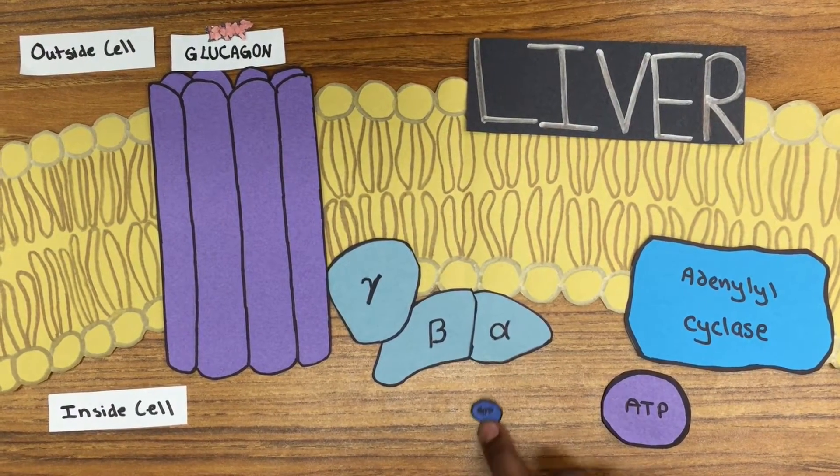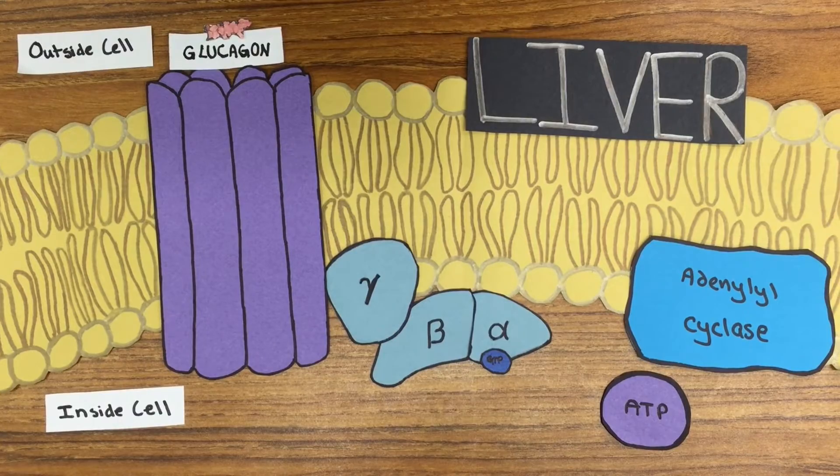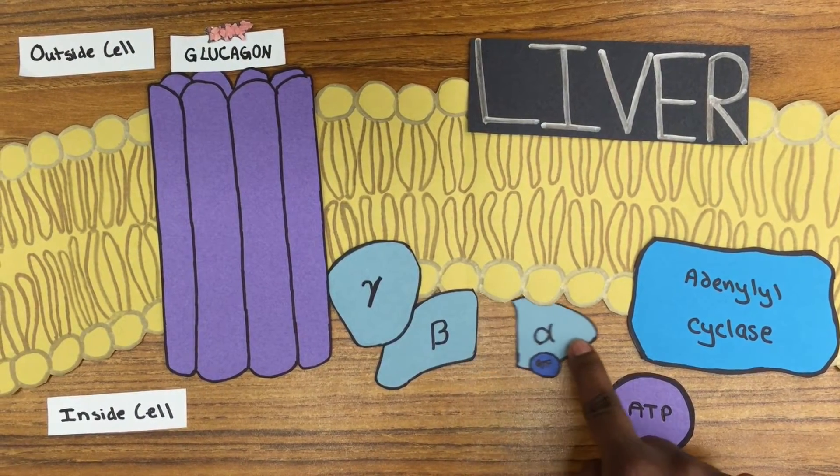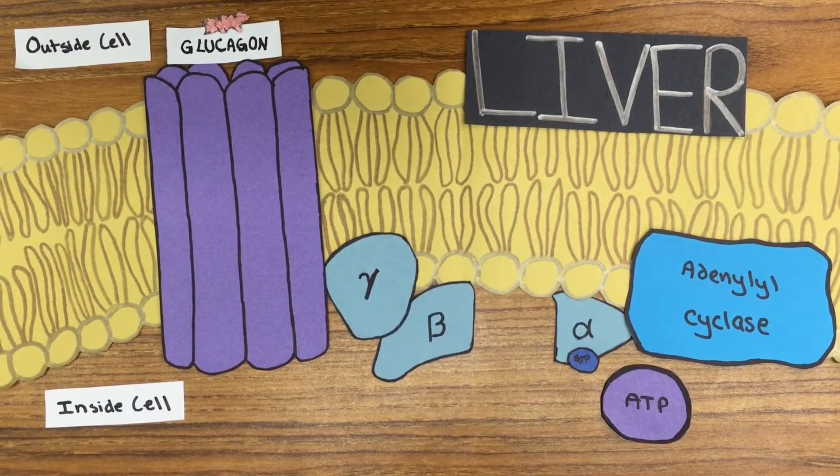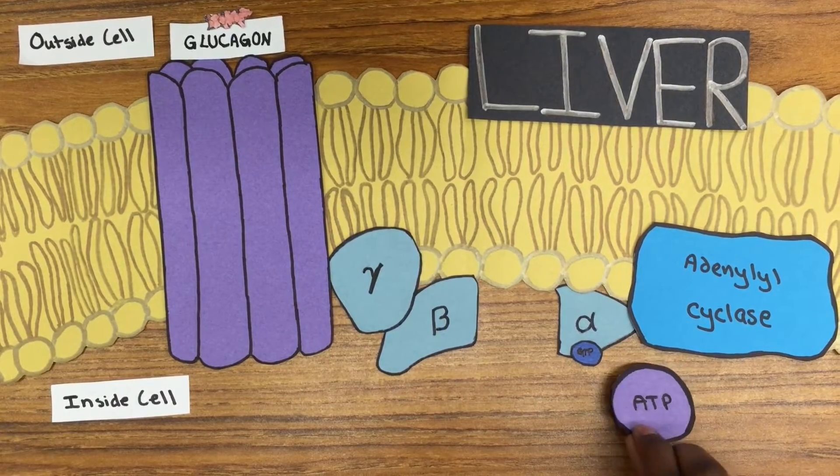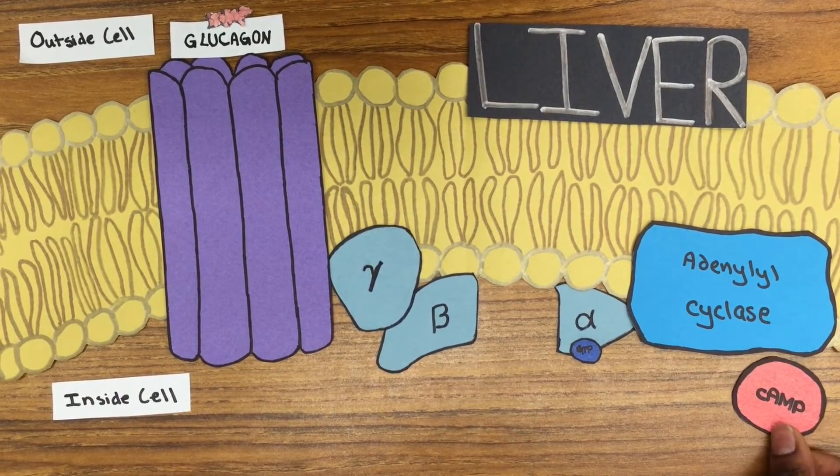However, when the G-protein binds to the GPCR, the GDP molecule on the alpha subunit is substituted with a higher-energy GTP molecule, which causes the alpha subunit to detach. The alpha subunit then activates the next enzyme in the cascade, adenylyl cyclase.